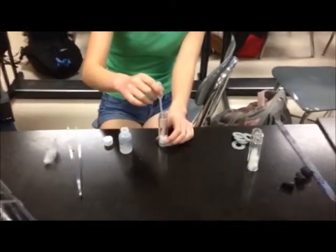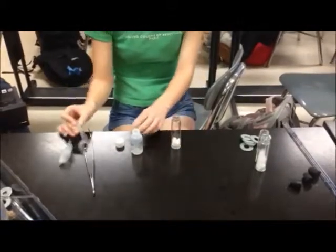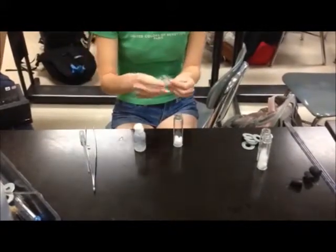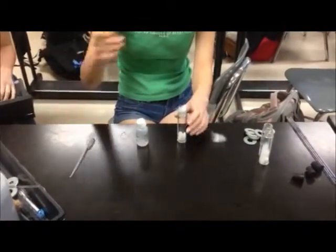We put a small amount of cotton in the bottom of the respirometer and add 10 drops of potassium hydroxide. Then we place a small amount of non-absorbent polyfill to serve as a buffer between the potassium hydroxide and the peas in the respirometer.